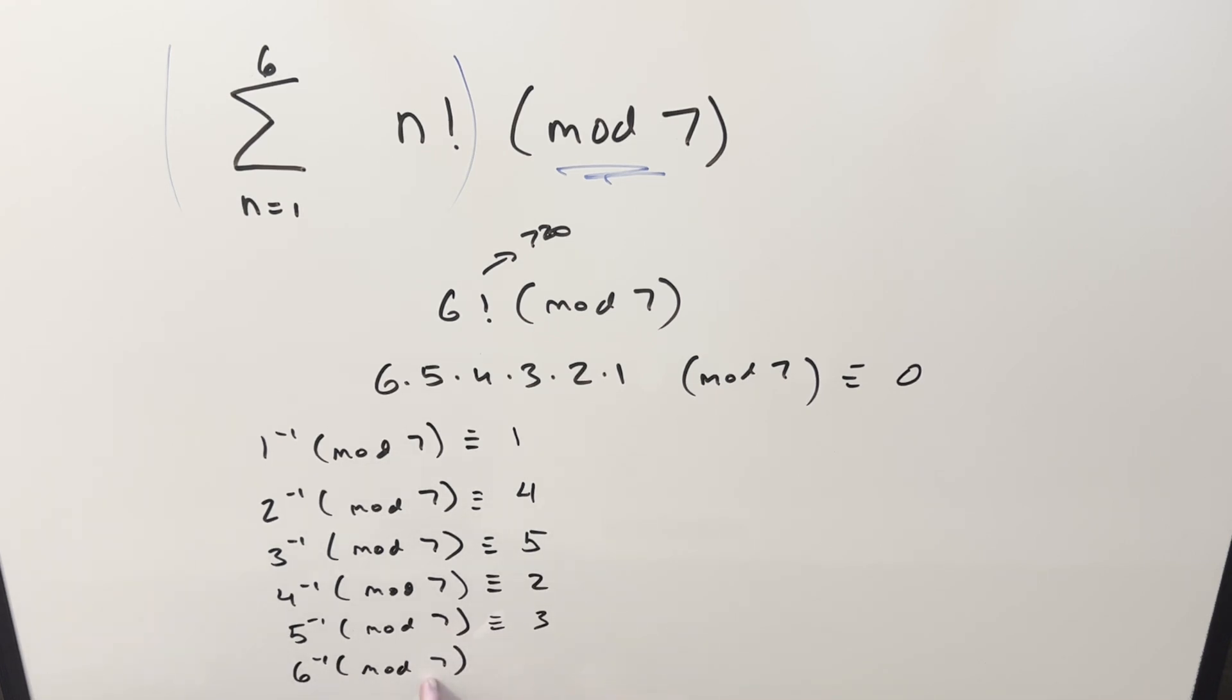And for our 6 inverse this one's kind of interesting because like we did before we can look at 6 as minus 1 mod 7. But then of course we know minus 1 times minus 1 gives us a 1. So this inverse over here I can write this as minus 1 but to keep it all reduced like this and be consistent let's write this as a 6.